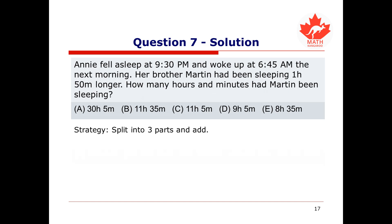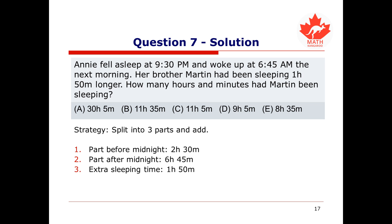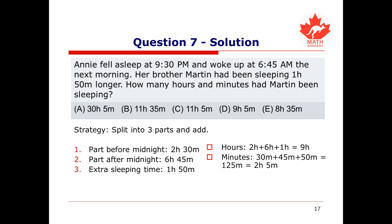Let's solve this numerically by splitting Martin's sleep into three parts and then adding them together. The first part is before midnight: since he fell asleep at 9:30 p.m. like Annie, that's 2 hours 30 minutes before midnight. The second part is after midnight until Annie woke up, which is 6 hours 45 minutes. The third part is the extra time Martin slept — 1 hour 15 minutes. Adding hours: 2 + 6 + 1 = 9. Adding minutes: 30 + 45 + 50 = 125 minutes, which equals 2 hours and 5 minutes. Combined: 9 hours + 2 hours 5 minutes = 11 hours 5 minutes, which is option C.